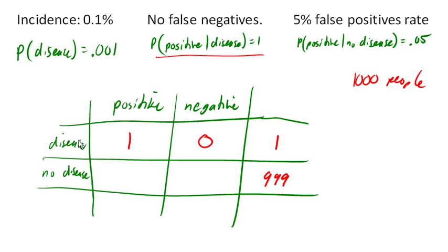But now out of these 999 people who do not have the disease, we know that 5% of them are going to test positive. So 5% of our 999 people is 49.95 or about 50.